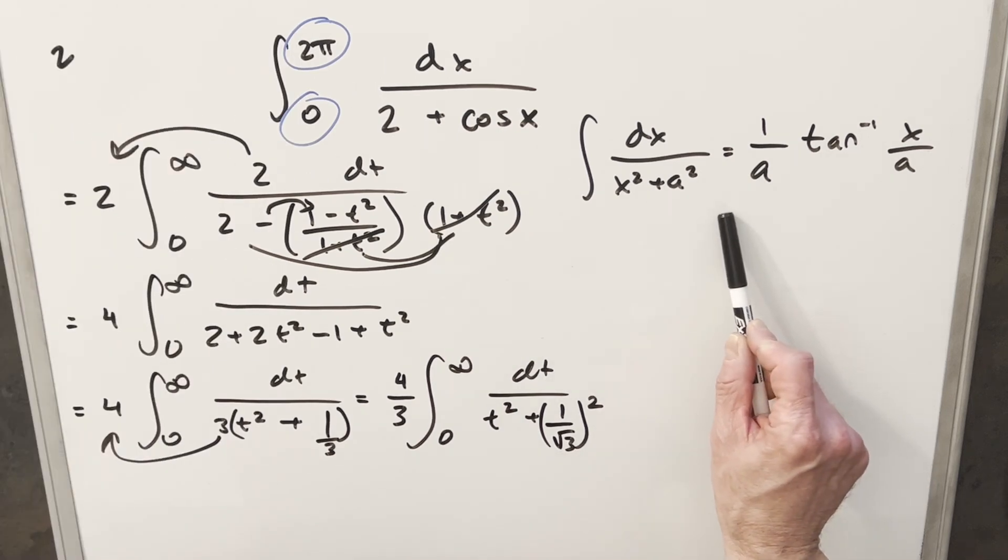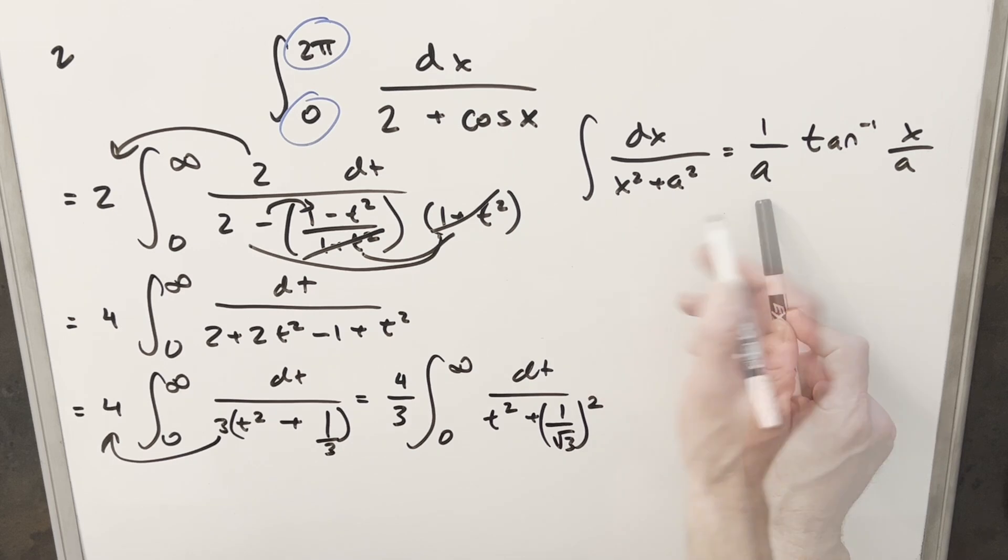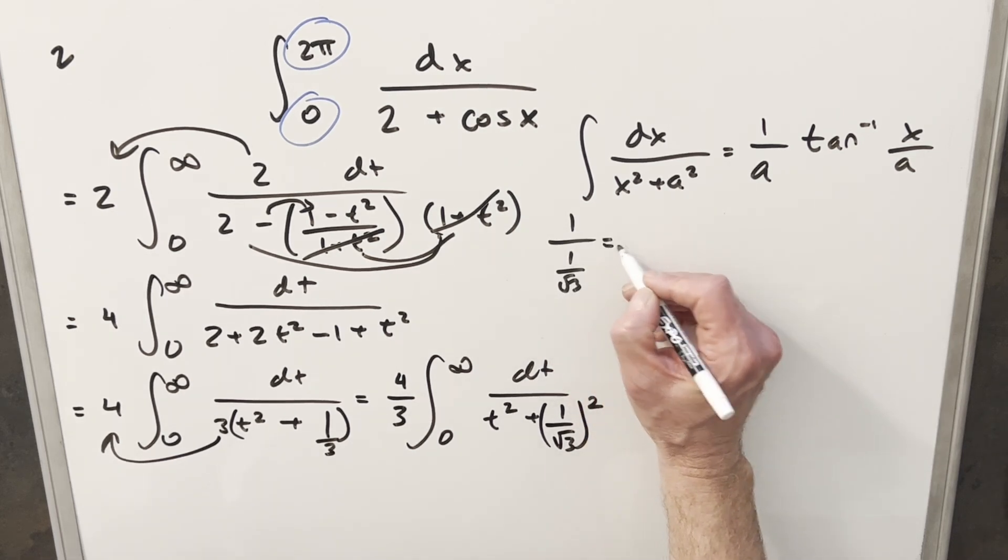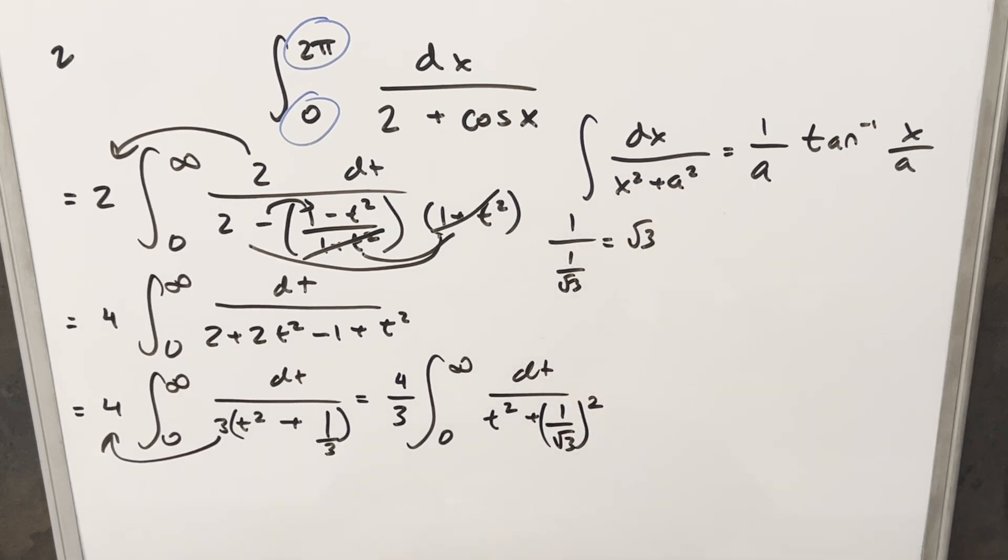So we have our arctan formula over here. Now one thing to notice, our a value is 1 over square root of 3. So if we take this and we have 1 over 1 over square root of 3, this is actually just going to become square root of 3 when we flip it. So let's do this thing out. We're going to have our 4 thirds in front. Then for our 1 over a, this is going to become square root of 3 arctan. And then again, we're going to have just, this is going to become square root of 3t. We just need to evaluate from 0 to infinity.